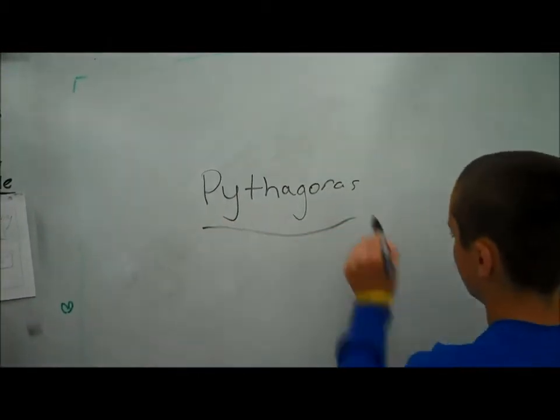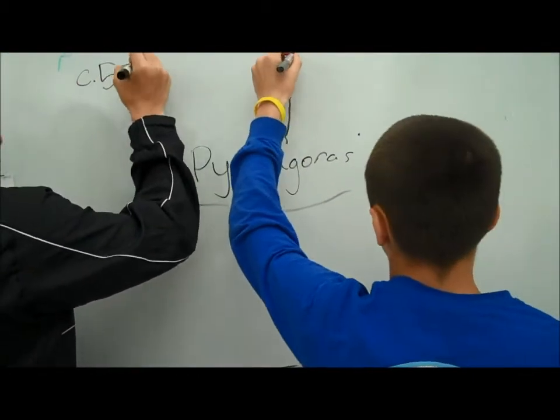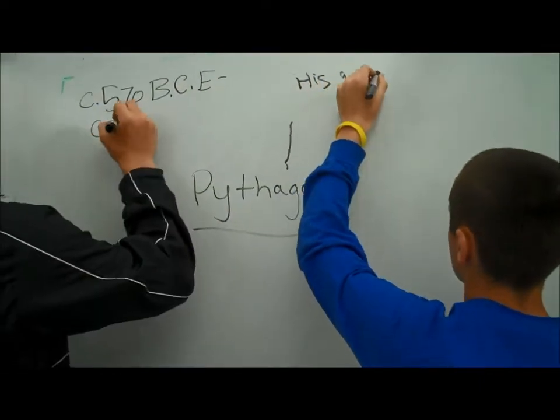Pythagoras' lifespan was from around 570 BCE to 490 BCE. This was a time of peace and wealth, also known as the Golden Age.